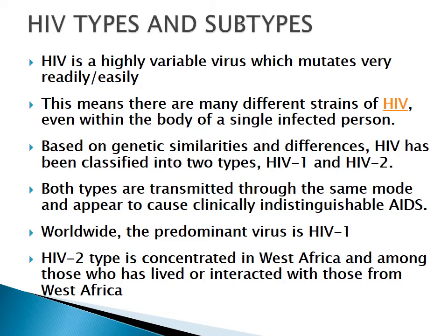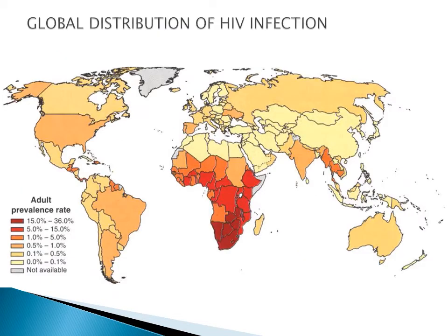Based on genetic similarity and differences, the virus has been classified into HIV-1 and HIV-2. Both are transmitted through the same modes and cause similar disease — AIDS. In distribution, HIV-1 has been found everywhere in the world, while HIV-2 is limited to West Africa. Those found with HIV-2 outside West Africa have had contact with West Africa or someone who lives there.